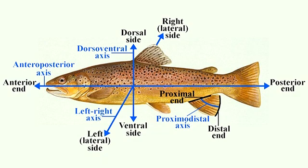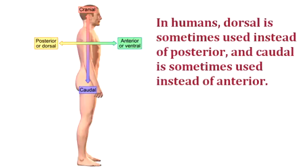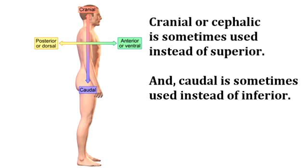Dorsal is the opposite of ventral, or bottom. These same terms are sometimes used in humans as well, where posterior becomes dorsal and anterior becomes ventral. The same thing goes for cranial and cephalic instead of superior, and caudal instead of inferior.